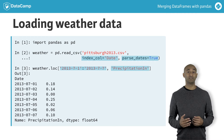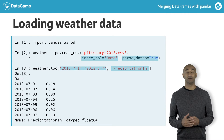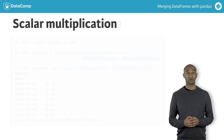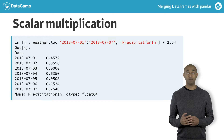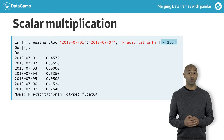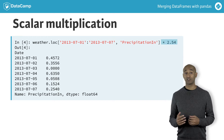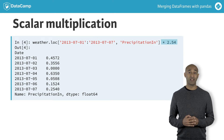The precipitation data are in inches. Let's convert them to centimeters. We use the asterisk to multiply a series element-wise by 2.54. We can broadcast standard scalar mathematical operations.